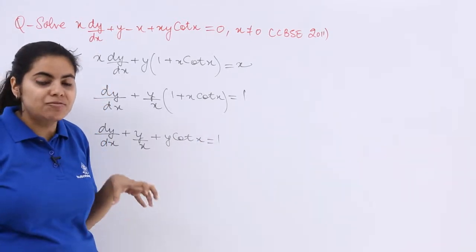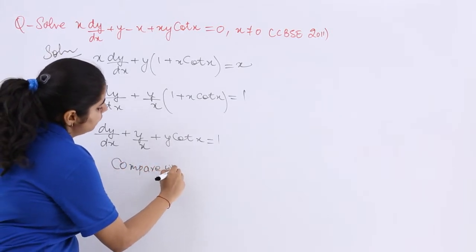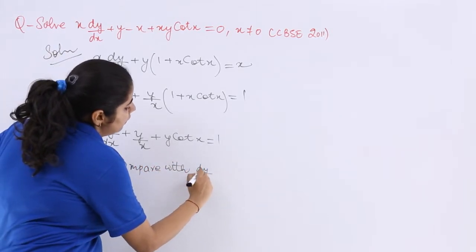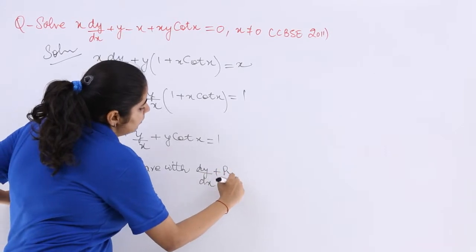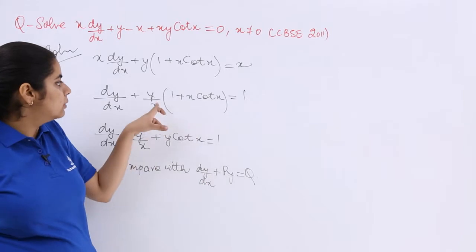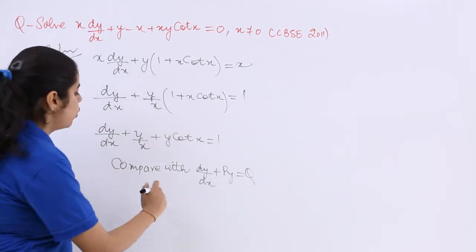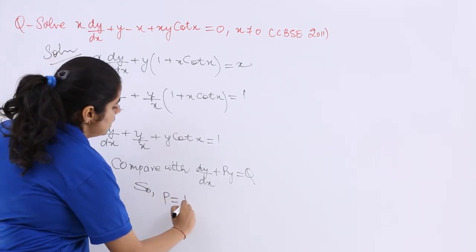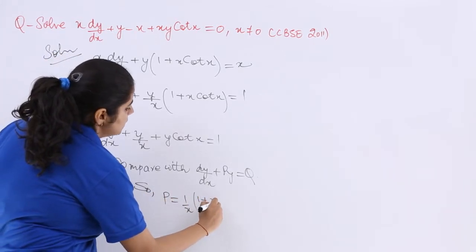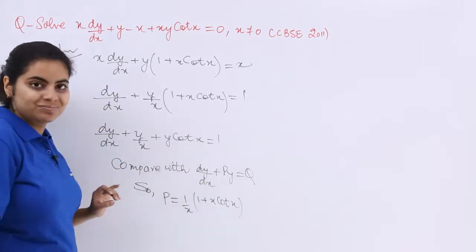Now we have to compare it with which equation? Compare with the general equation. Compare with dy/dx + py = q. Now what should be p? p should be which is the coefficient of y. So what is p? p is 1 upon x, 1 plus x cot x. From where I have got this? From this part. Right?